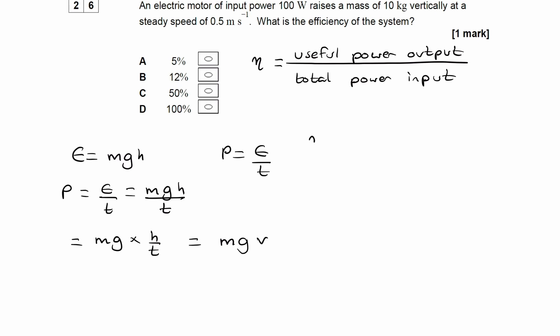So then our equation becomes, our efficiency is the useful power output, which is mgv, divided by this total power input, which was the 100 watts, I'll just call that p_i for p in.